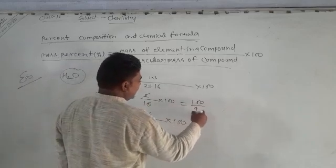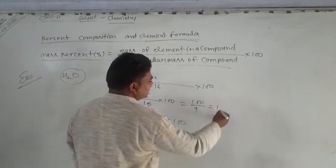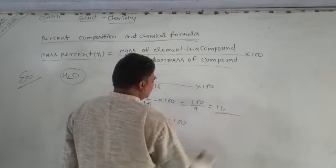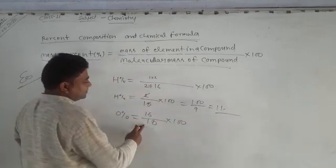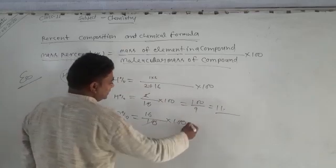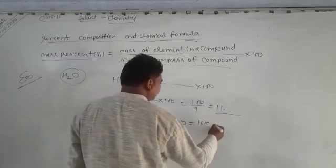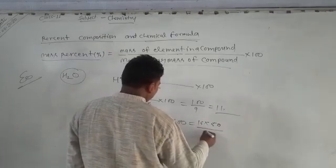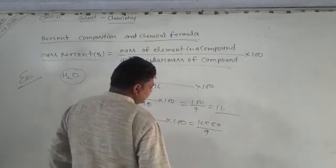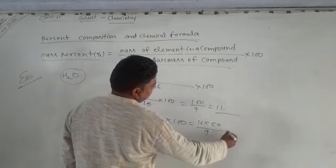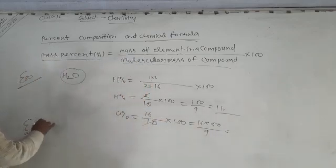That's hundred upon nine. So we get the calculations: 1 upon 9 equals approximately 11%, and 16 upon 18 gives us about 89%.